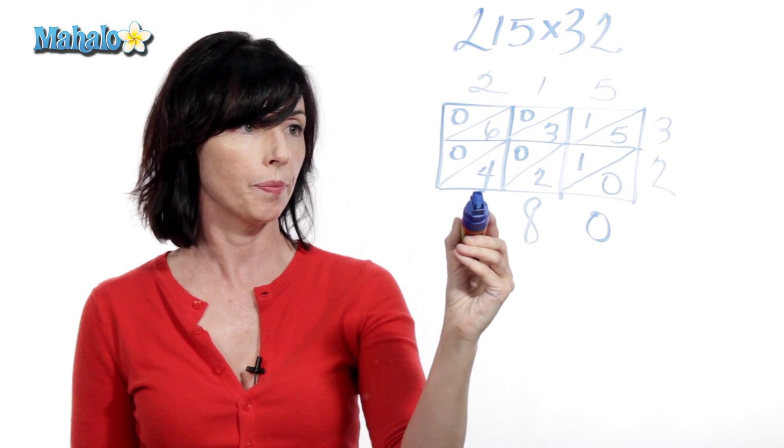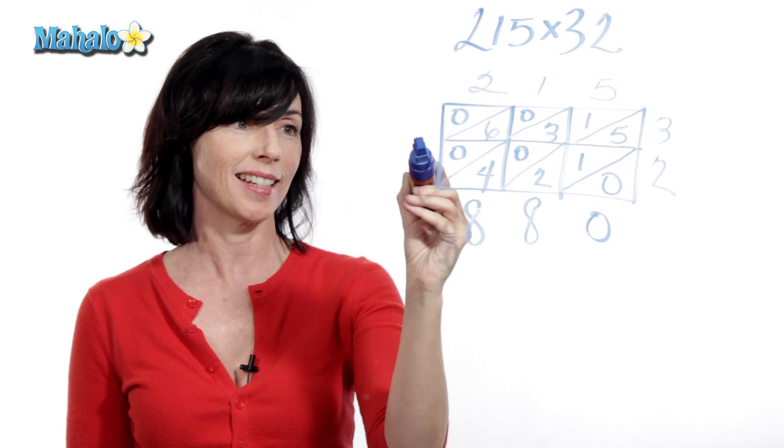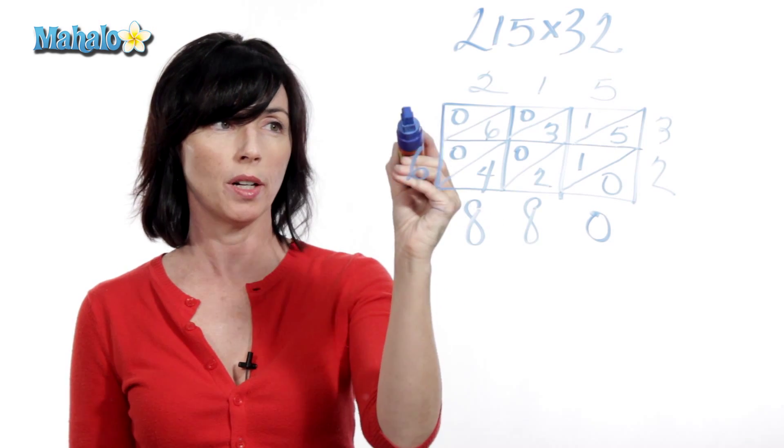4 plus 4 is 8. 0 plus 6 is 6. 6 plus 0 is still just 6. And I don't have anything up here, I just have a 0.